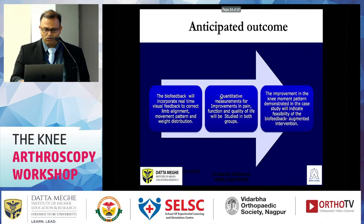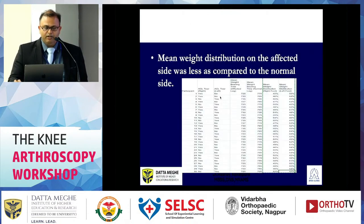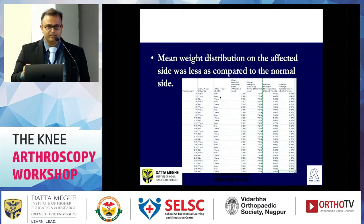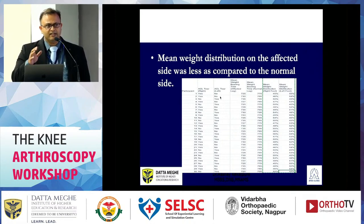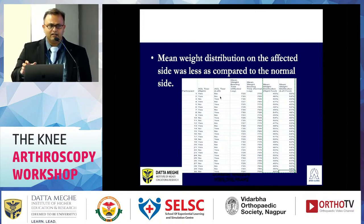This gives us our quantitative feedback. The results showed that the mean weight distribution on the affected side was less compared to the normal side in almost 75 to 100 percent of patients. If you have a chronic or acute isolated ACL tear patient, they have gait disturbance.